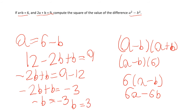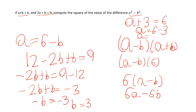Now b equals 3. Let's go back to the first equation: a plus b equals 6. Substituting b in: a plus 3 equals 6, so a equals 6 minus 3, which means a equals 3. So we know a is 3 and b is 3.